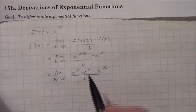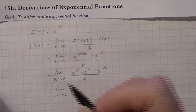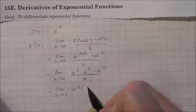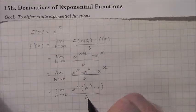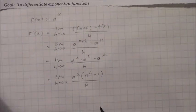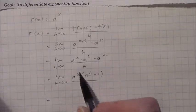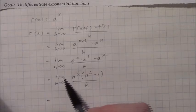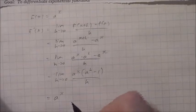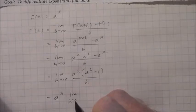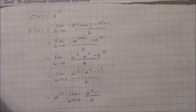Now, a to the x plus h, using one of the exponent laws, we can undo that to leave us with a to the x multiplied by a to the h minus a to the x all over h, as h approaches 0. Then we can factor out the a to the x, giving us the limit of a to the x multiplied by a to the h minus 1 all over h as h approaches 0.